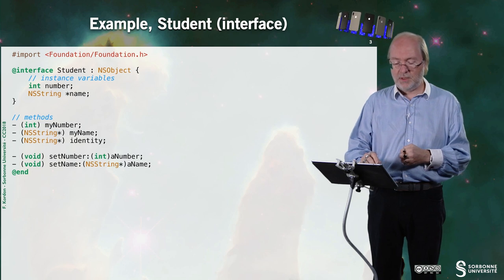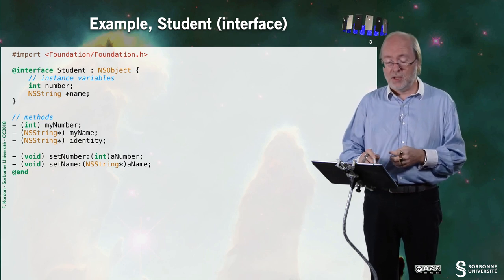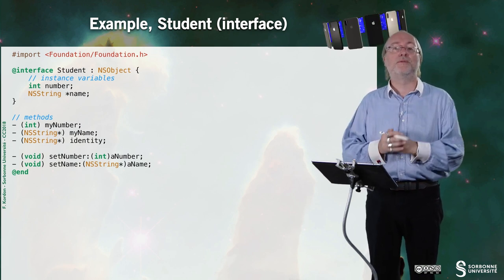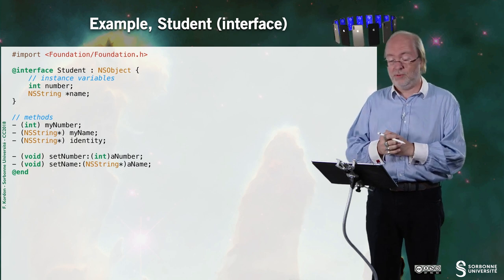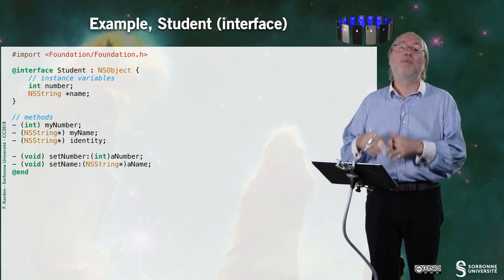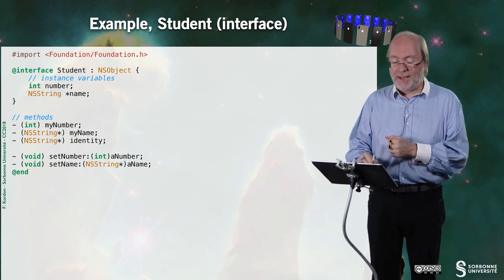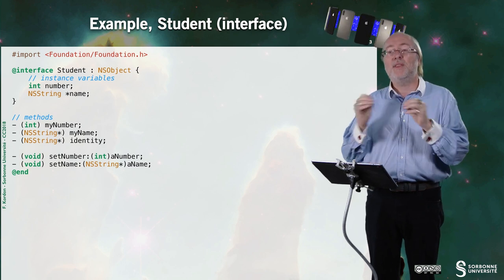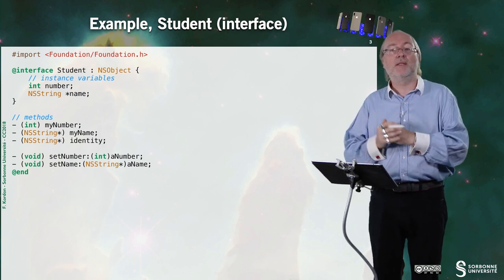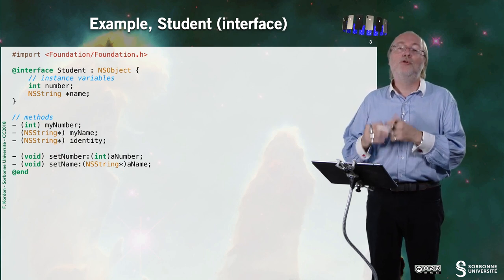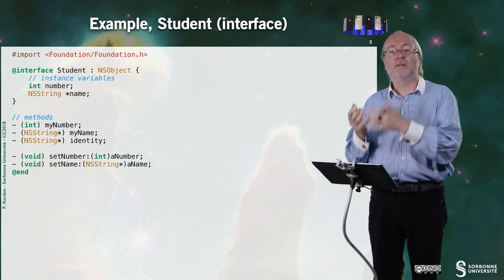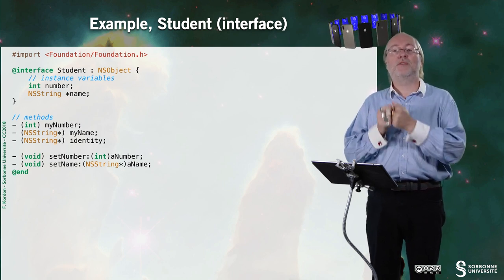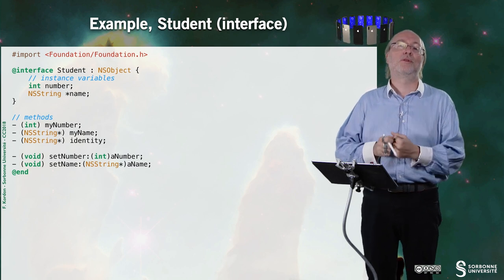I have here several methods. The first method, myNumber, provides the number of the current object. myName provides the name. identity provides a string, an NSString, that merges the name and the number. And you have here two setters that are allowing you to set a number to an object of type Student, and to set a name to this object.